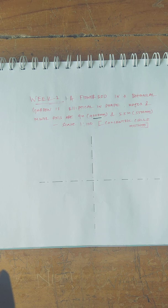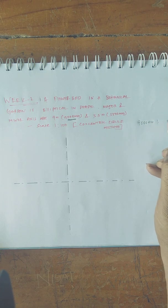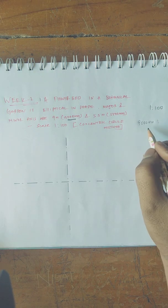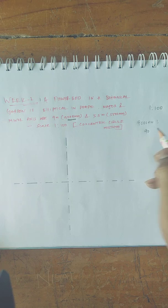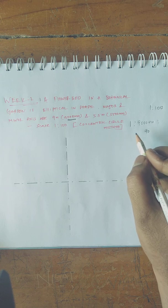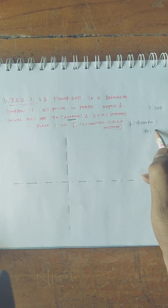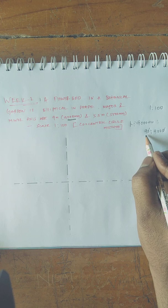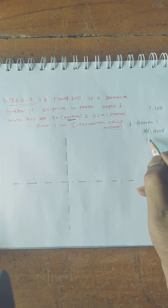Here the major axis is 9 meters and minor axis is 5.5 meters. Since they have specified a scale, we need to draw 9000 mm at a scale of 1 is to 100. So I am considering drawing 90 mm — that means 9 centimeters. For every 100 mm actual, I am making 1 mm on drawing. So 9000 divided by 100 gives 90 mm, which confirms the ratio 1 is to 100.